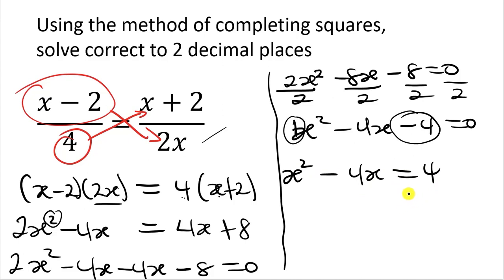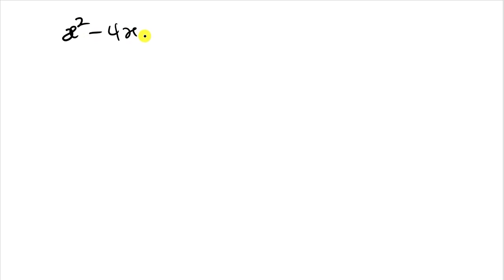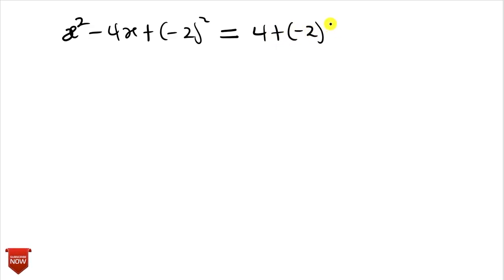Next, we find half of the coefficient of the x term. The coefficient of x is negative 4. Half of that is negative 2. We put negative 2 in brackets and square it to get (negative 2) squared. We add this to both sides: x squared minus 4x plus (negative 2) squared on the left-hand side, equals positive 4 plus (negative 2) squared on the right-hand side.